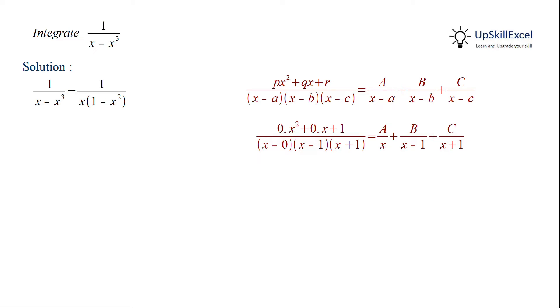Here we will write x minus x cube as product of x and 1 minus x square. Now in the numerator we have 1, so we can add and subtract x square from the numerator to make it similar to the terms in denominator.